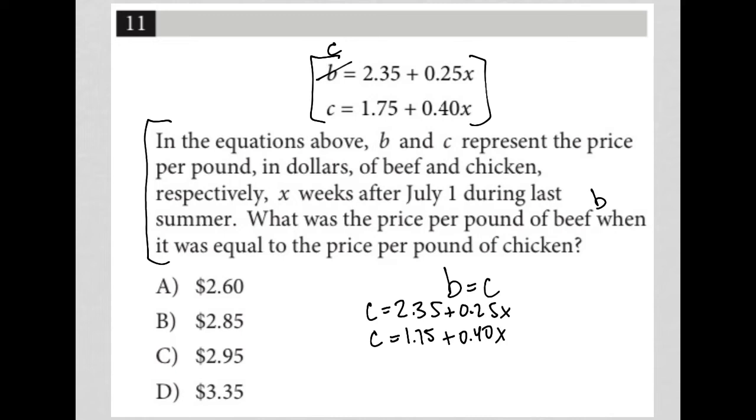Here we use another method called substitution. We could use elimination, but substitution is easier in this case, and it lets me show you this other method. Since c equals both expressions, I can set them equal: 2.35 + 0.25x = 1.75 + 0.40x. Now I simplify by subtracting 2.35 and 0.40x from both sides.